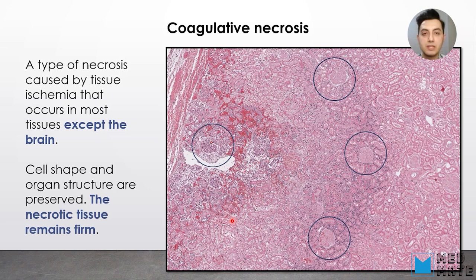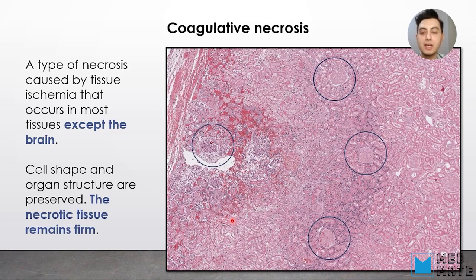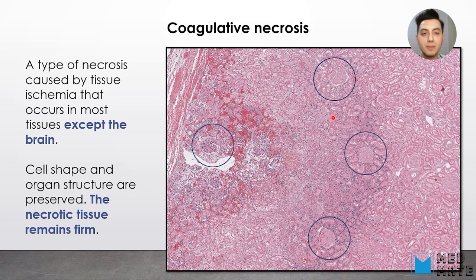Now let's talk about different types of necrosis and what their hallmarks look like. The first type is coagulative necrosis, which is caused by tissue ischemia and occurs in most tissues except the brain. As you can see in the tubules of the kidney, you can observe coagulative necrosis. The necrotic tissue remains firm. You can see the absence of nuclei in parts of the tissue, but the cell shape and tissue architecture is preserved.